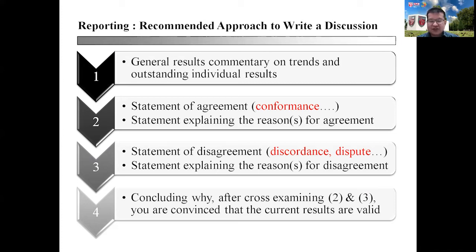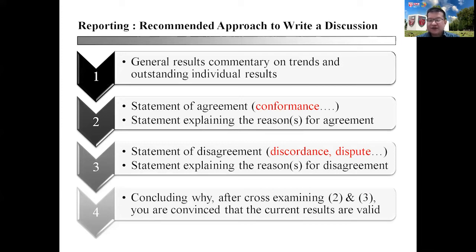Being a research report, it is always important to consider an unbiased view by including a statement of disagreement or discordance — any statement that disputes or potentially disputes your current findings. This is important as it allows us to have an unbiased view of the research topic. This is then followed by a statement explaining the reasons for disagreement. By viewing the statement of disagreement alongside the statement of agreement, we can conclude why — after cross-examining these statements — we are convinced that the current results are valid.